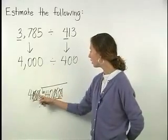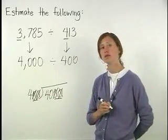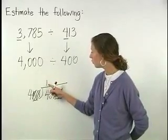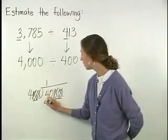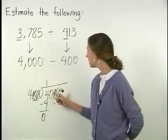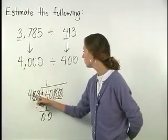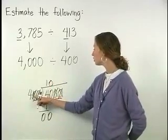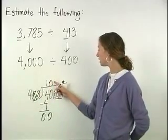So we have 4 divided into 40. 4 divides into 4 one time. 1 times 4 is 4. And 4 minus 4 is 0. Now we bring down a zero. 4 divides into zero zero times. So 4 divides into 40 ten times.